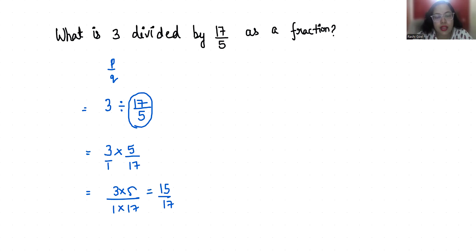So 3 divided by 17 by 5 is 15 by 17. I hope it's clear and you find it useful. Please give us a thumbs up and do subscribe to my channel. Stay tuned for more upcoming videos.